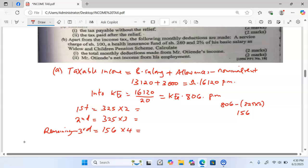So, if you take 325 times 2, you get shillings 650. 325 times 3, you get 975. And if you take 156 times 4, you get 624. And whatever amount you get here will give us what we call total or gross tax.